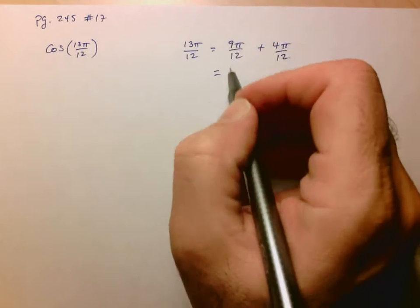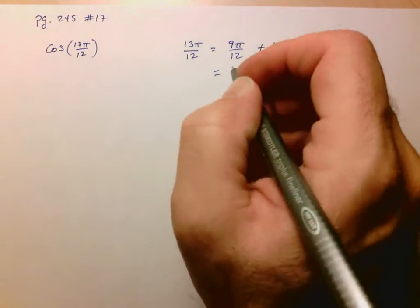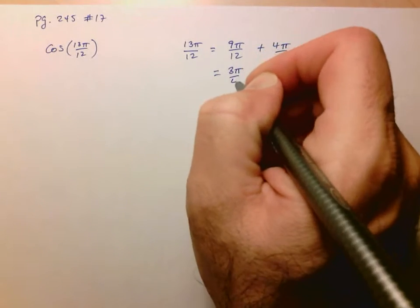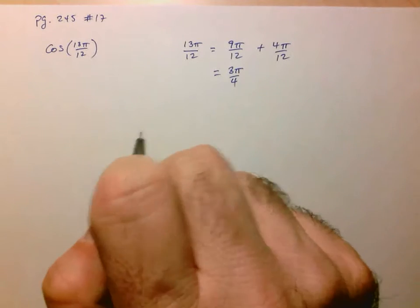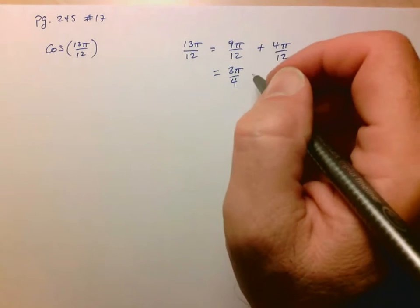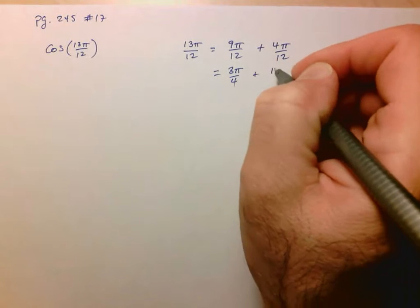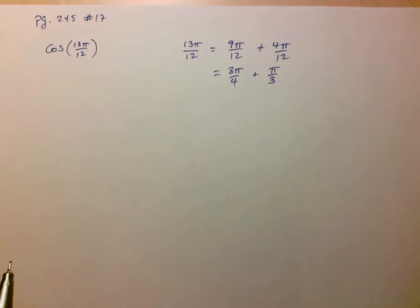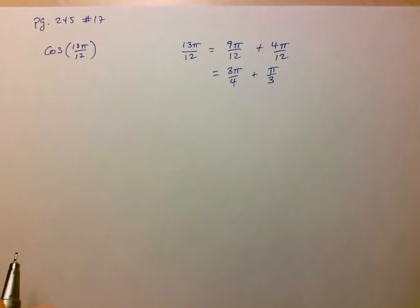And this here ends up just being divided top and bottom by 3, so 3π over 4, which is definitely a special angle in the second quadrant. And here this is just going to be π over 3, which of course is one of our main special angles.